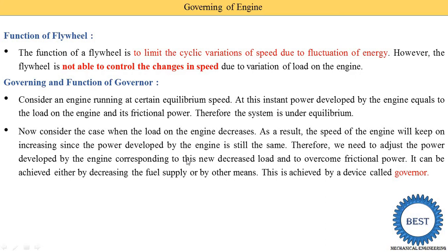Corresponding to this new load variation, to overcome friction power, it can be achieved either by increasing the fuel supply or by other means. We need to reduce the amount of fuel supplied, or by another mechanism known as throttling. For a petrol engine and for a diesel engine, there are different governing approaches, and this is achieved by the device called the governor.